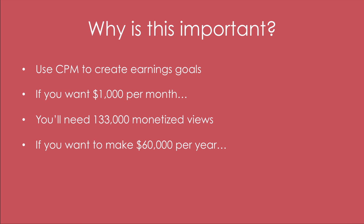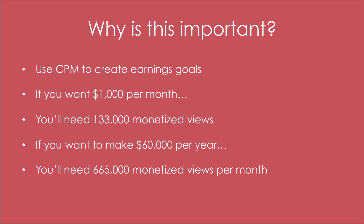Say you want to make $60,000 per year as a full-time YouTuber. You're going to need 665,000 monetized views per month — not per year — to make that $60K per year. That would be $5,000 US dollars per month, totaling a yearly salary of $60K.